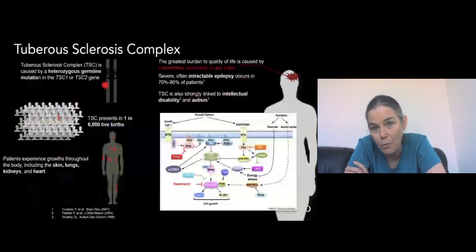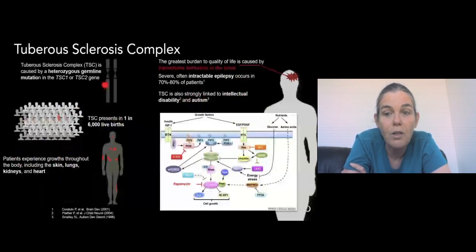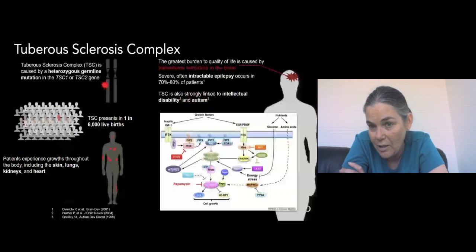And when there's growth in the brain, it's called hamartomas, which causes severe and often intractable epilepsy. That's quite frequent, and there's also some fairly significant chances of intellectual disability and autism.